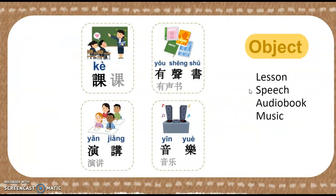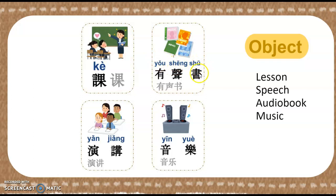Great job! Okay, now we have an object here. So we have listen, and then we have speech, and then we have audiobook and music. Let's practice in Chinese — please repeat after me three times: 客人, 客人, 客人. 客人. 有声书. 音乐。